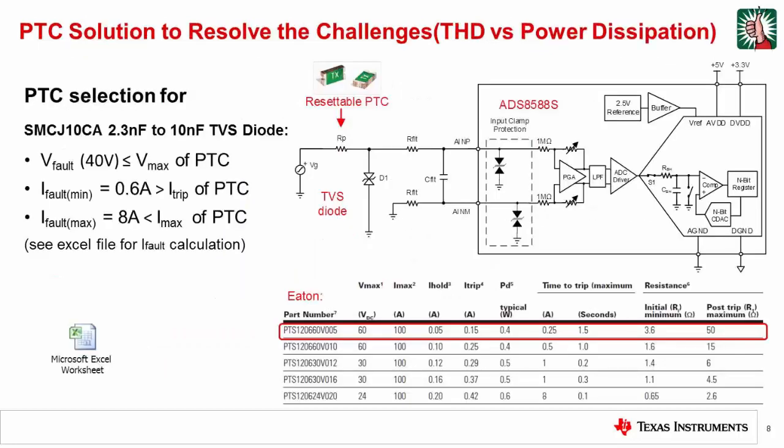This slide shows a list of several different PTC fuses. We will select the device with a 60-volt rating and the lowest trip current. Also, notice the post-trip resistance and initial resistance are relatively low. On the next slide, we will look at how the PTC fuse impacts THD performance.